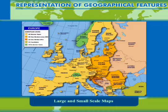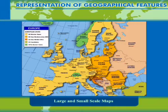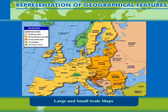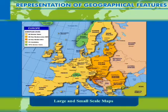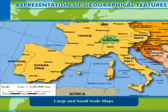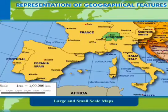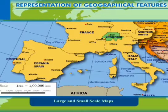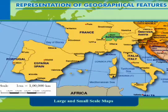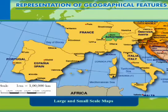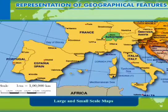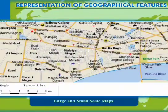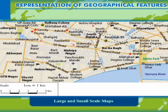When a large area is shown on paper, very few details may be marked. For example, a map of the continent with the scale 1 cm equal to 1 lakh km cannot show the details of a city. Such a map is called a small-scale map.